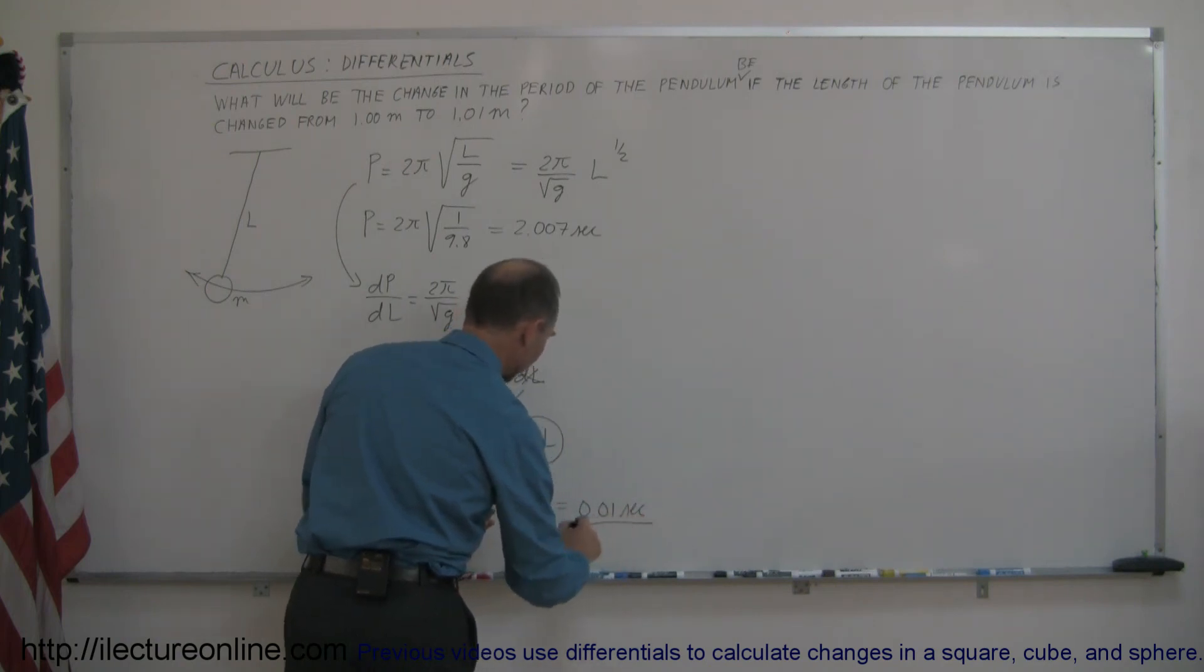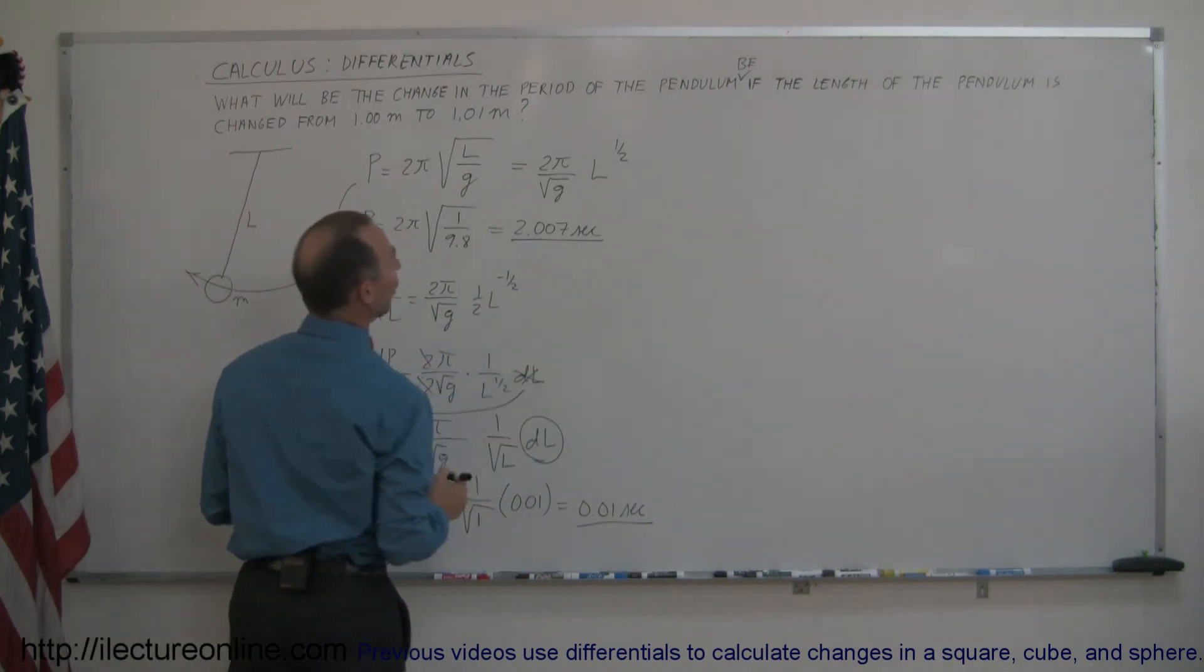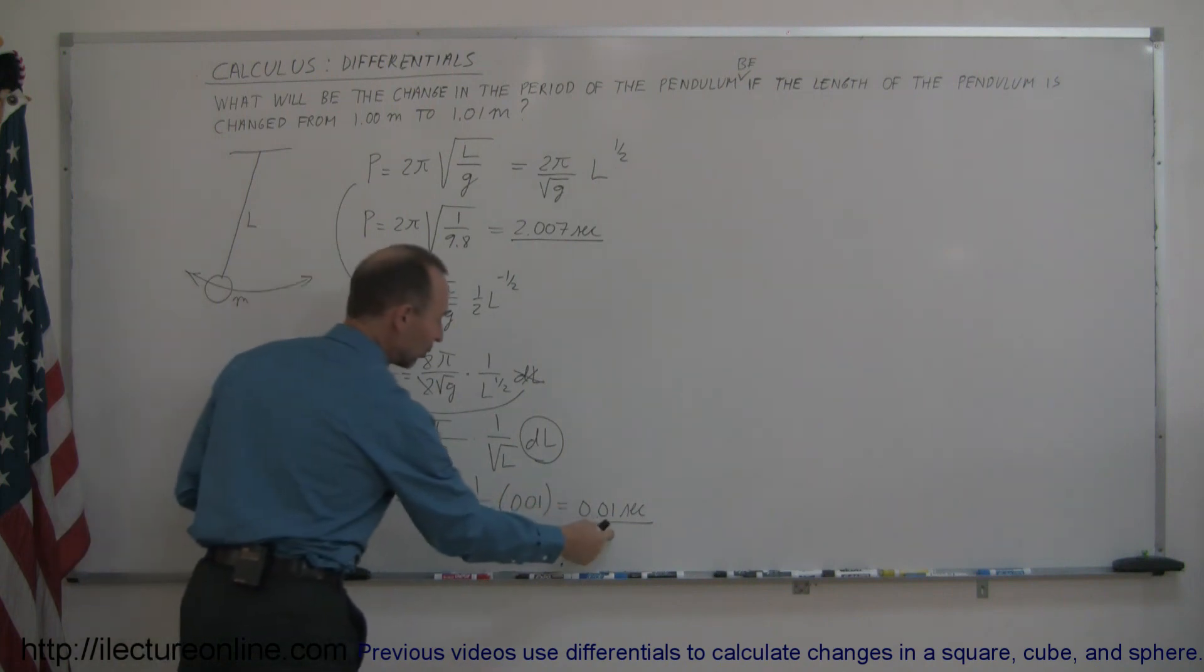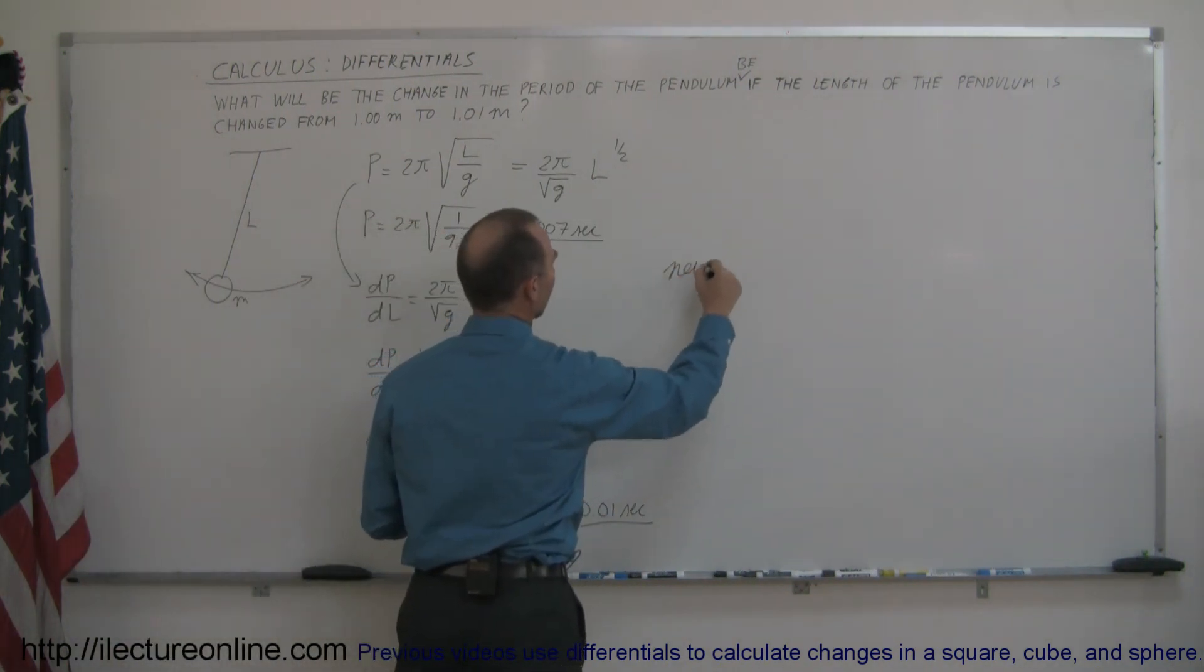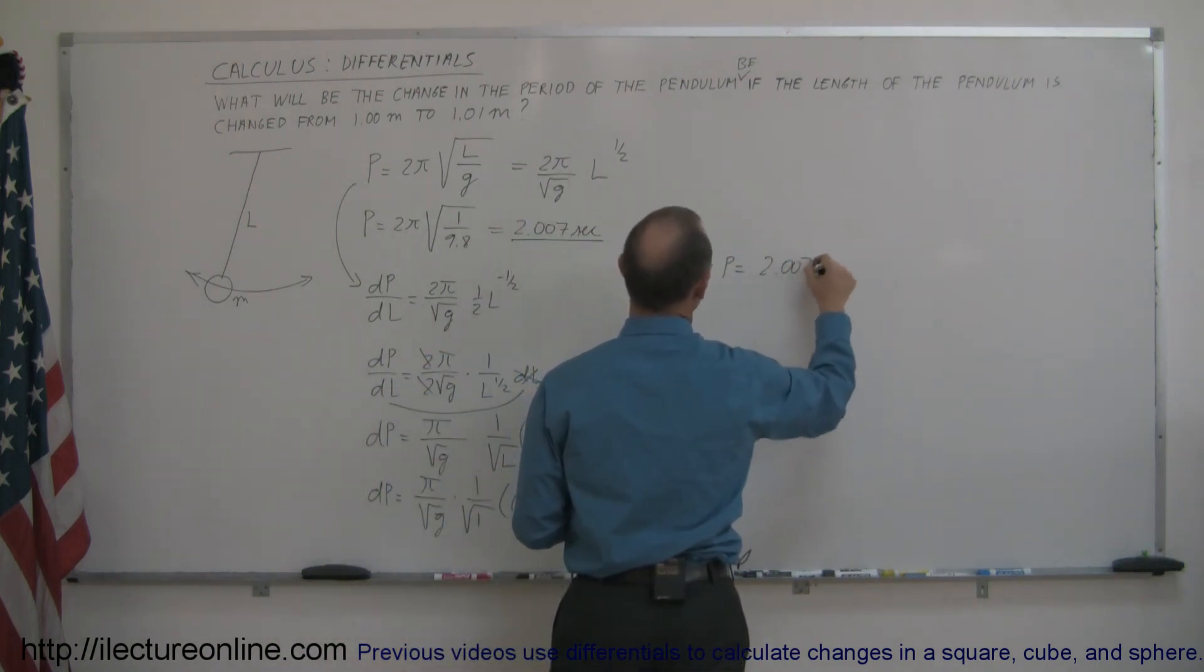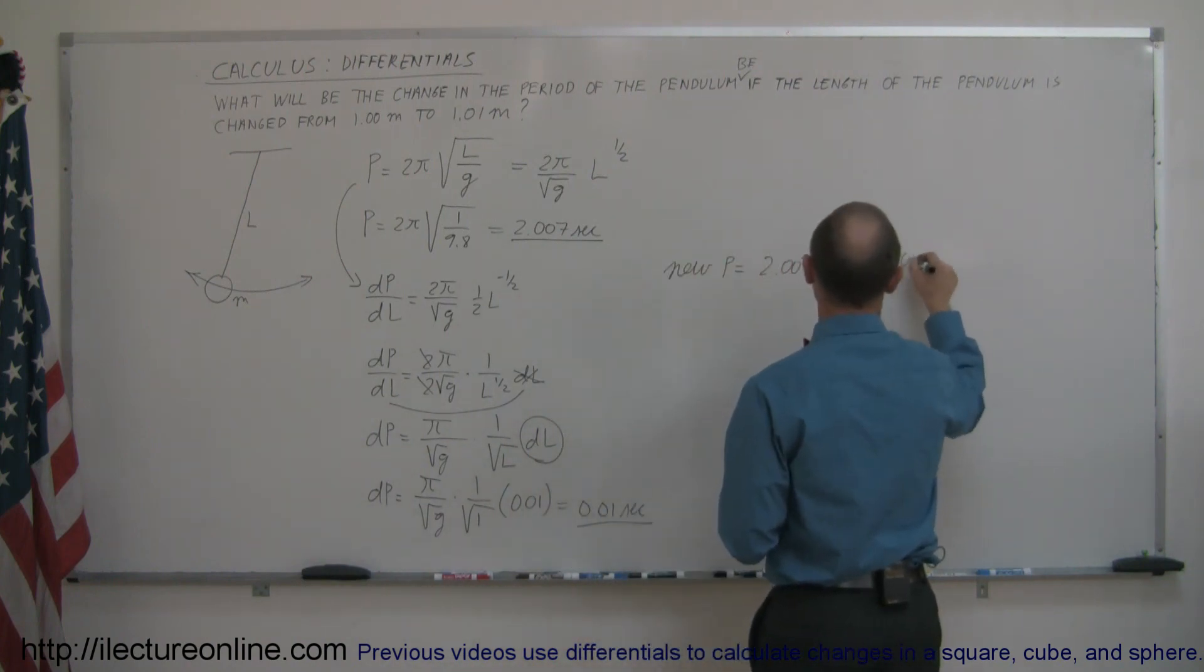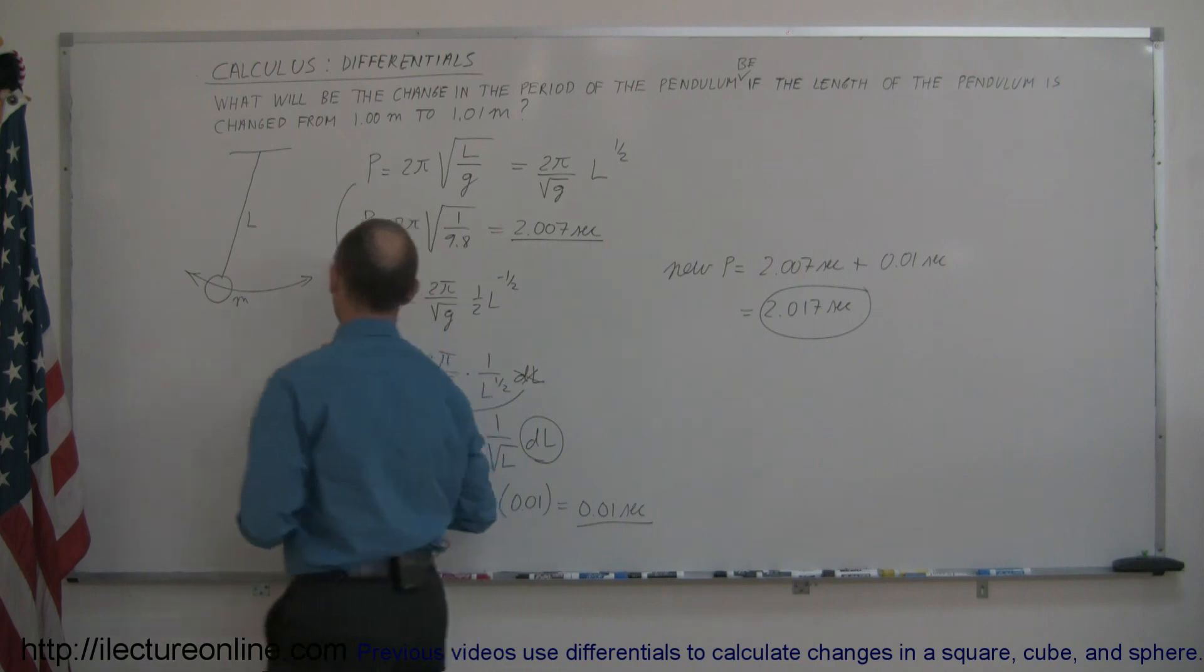And of course that would be in terms of seconds. So if the original period was 2.007 seconds and we change the length of the pendulum by 1 cm, we have to add this much to it. So that the new period would be equal to the original 2.007 seconds plus the added 0.01 seconds. And so that would be equal to 2.017 seconds. And that would be the new period, a little bit longer than before.